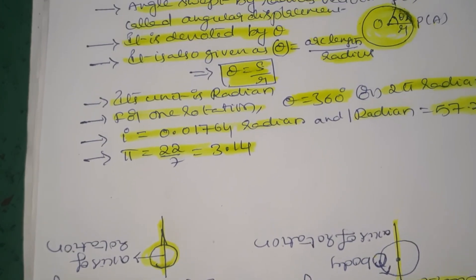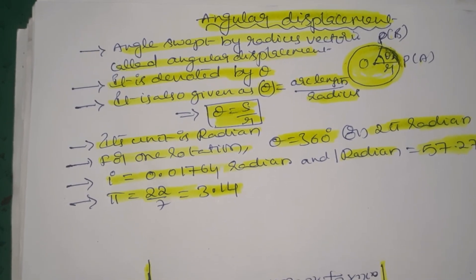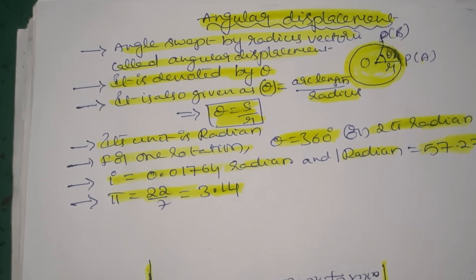The simple definition is: angle swept by radius vector is called angular displacement. In the next video, we will explain angular velocity and angular acceleration.